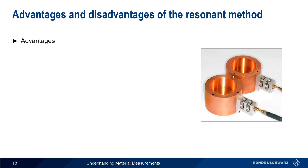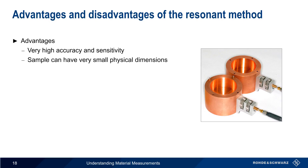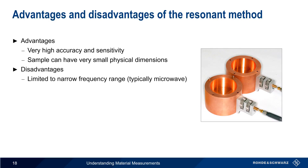The resonant method has two main advantages. First, this method has very high accuracy and sensitivity, especially compared to more broadband methods like OCP. This method also allows the sample to have very small physical dimensions compared to some of the other methods we've discussed. The main disadvantages are that it's typically limited to a narrow range of frequencies in the microwave region, and good results require a relatively low loss material.